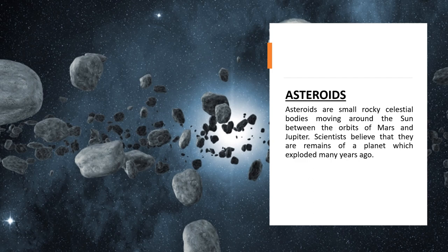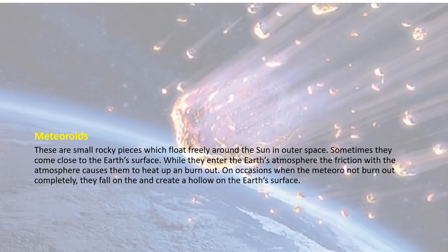Scientists believe that asteroids are remains of a planet which exploded many years ago. There was a big bang — a blast from which the planets were formed and some rocks were left, which became the asteroids. These remaining parts of planets are known as asteroids.